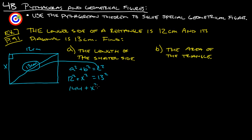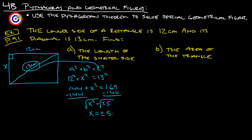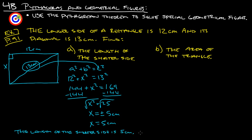So that's 144 plus x squared equals 169. Subtract 144 from both sides and we get x squared equals 25. We don't want to know what x squared is, we want to know what x is, so we square root both sides and we get x equals plus or minus 5 centimeters. But you can't have a negative length, so x is 5 centimeters.